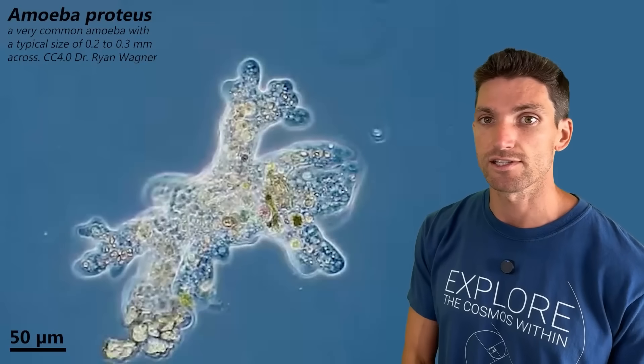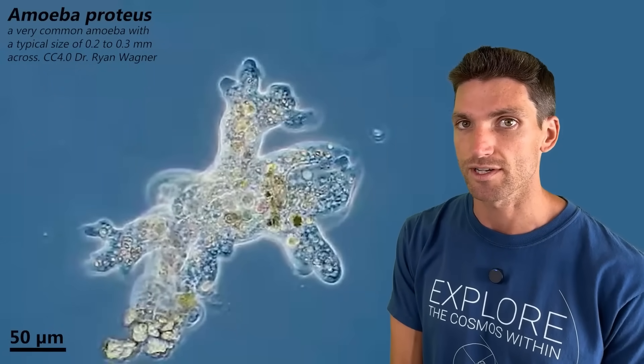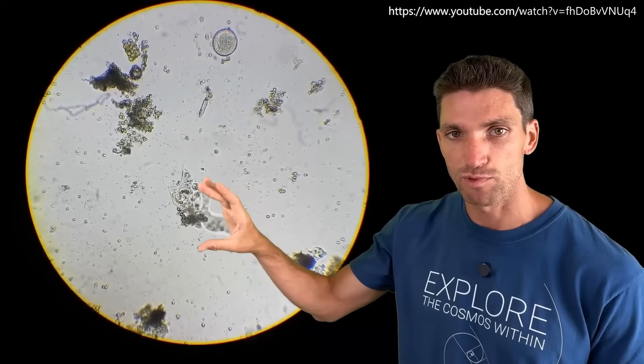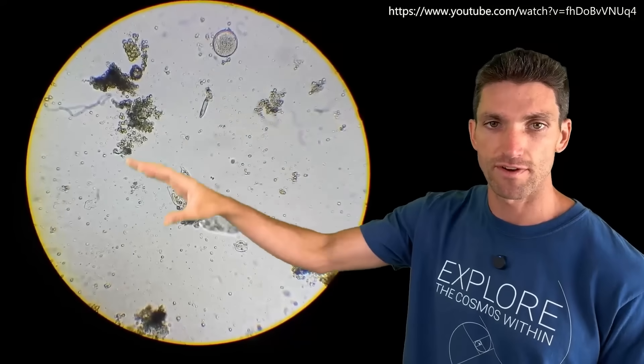So here is amoeba proteus. Let's look at another example so we can see one exploring its environment. And here we have a drop of pond water. There's an amoeba exploring whatever this is. We see a whole bunch of other stuff as well.